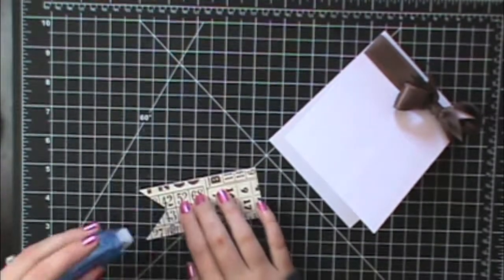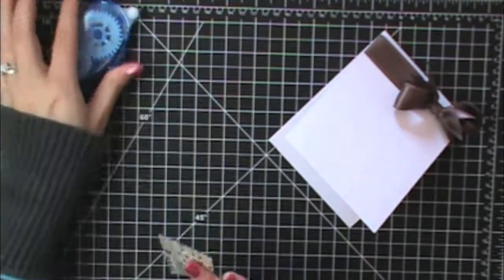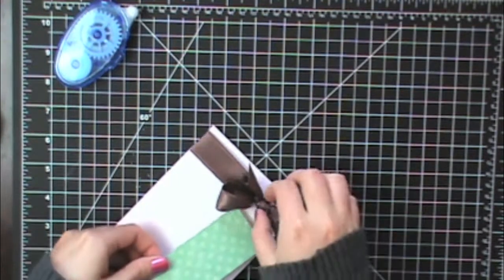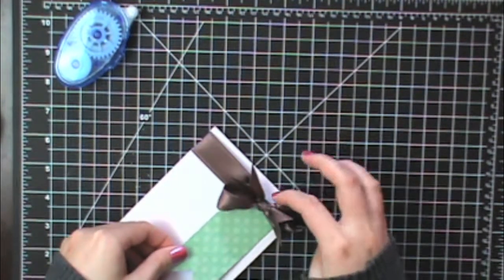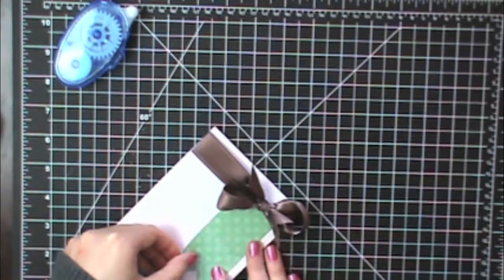And again I said no stamping so we're going to make a sentiment out of little alphabets. Get this on here. I don't want it to stick up above the little bow so I've got to be careful where I line it up.